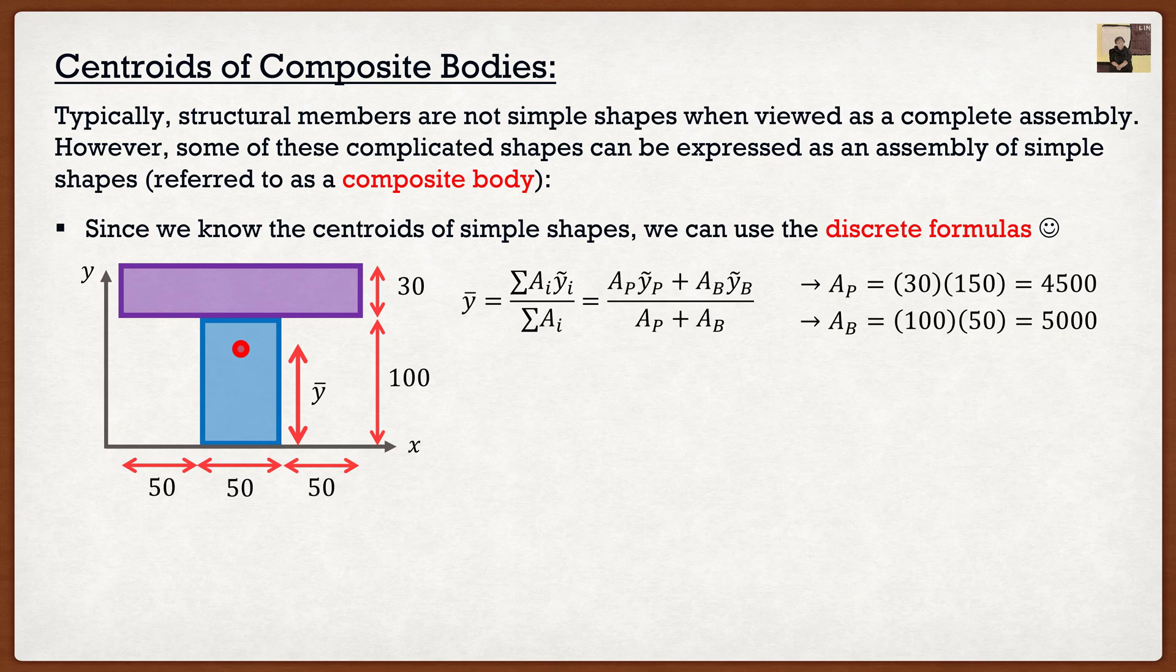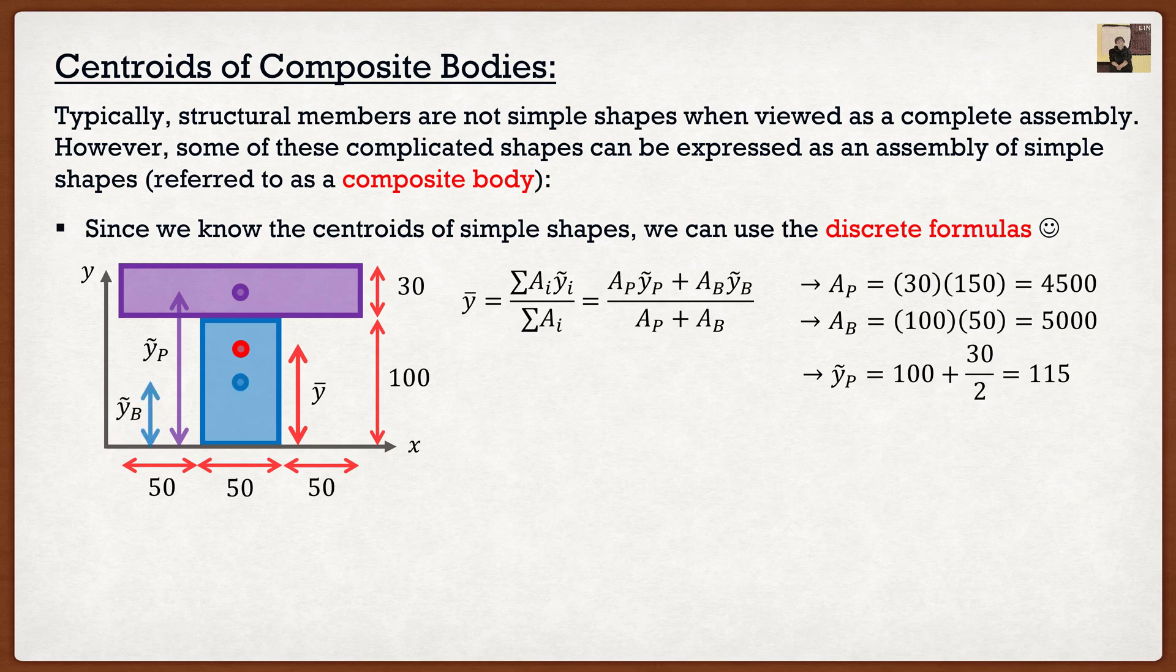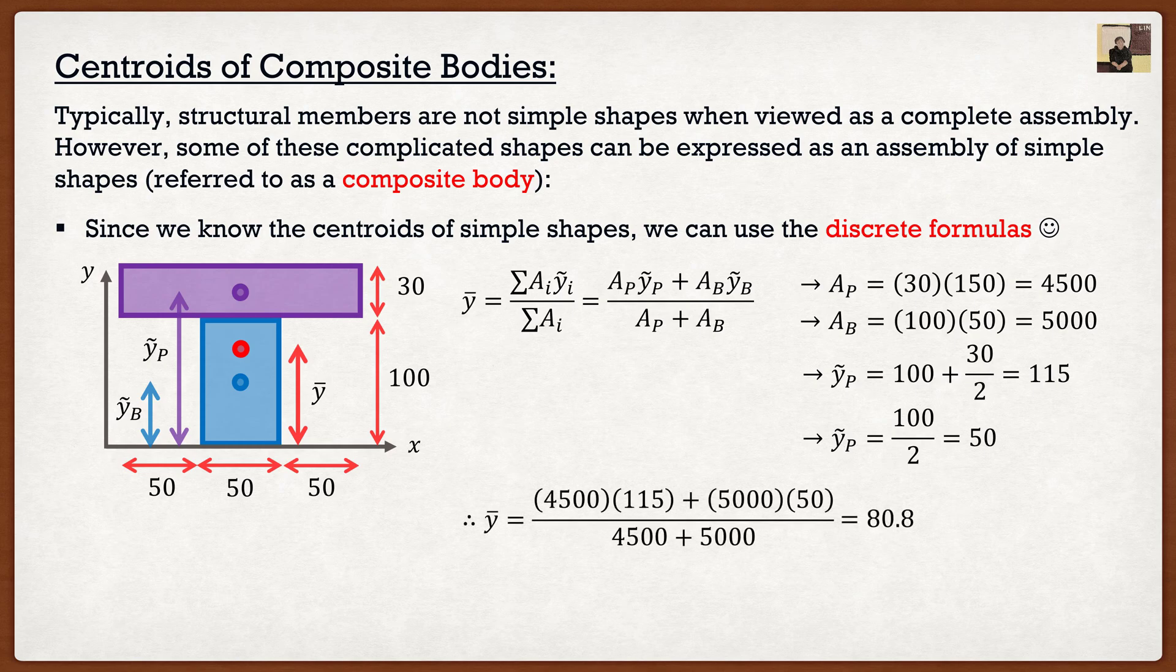And then the last thing that we need is the y squiggle for both of these shapes. But again, that's just the distance from the axis to the centroid. And we know that the centroid of a rectangle is halfway up. So if I was looking for y squiggle of the purple shape, we know it's going to be something like this. So it's going to be 100 plus half of 30. So if we were to type that in, we get 115. If I were to look for y squiggle of the blue shape, again, it's just halfway up our rectangle, it's going to be just 100 divided by 2, which is 50. And if I were to substitute everything into my equation, I get that the centroid is 80.8.